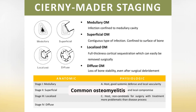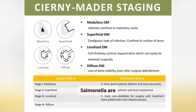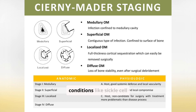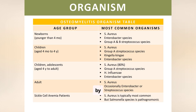Common osteomyelitis organisms vary by age. S. aureus predominates, but other bacteria like Enterobacter and Salmonella are significant, especially in specific conditions like sickle cell anemia.